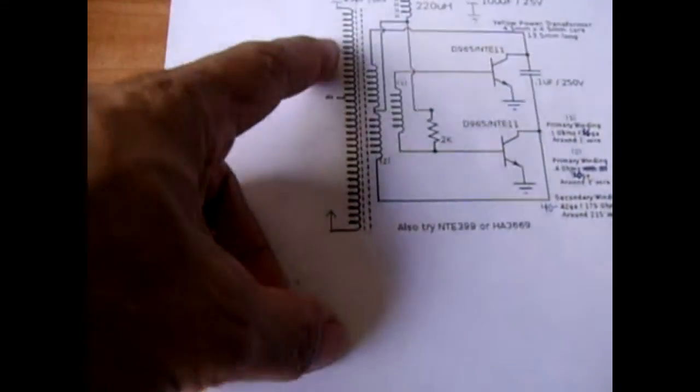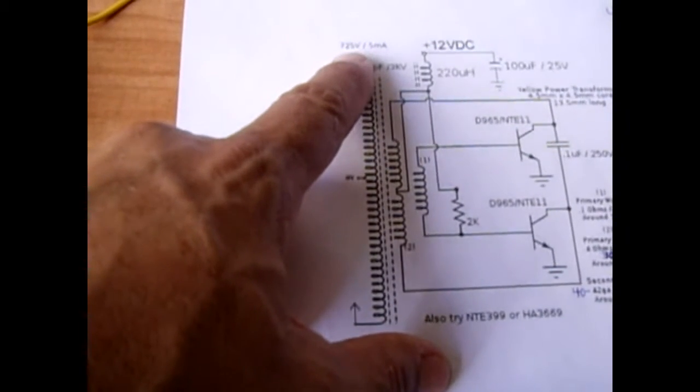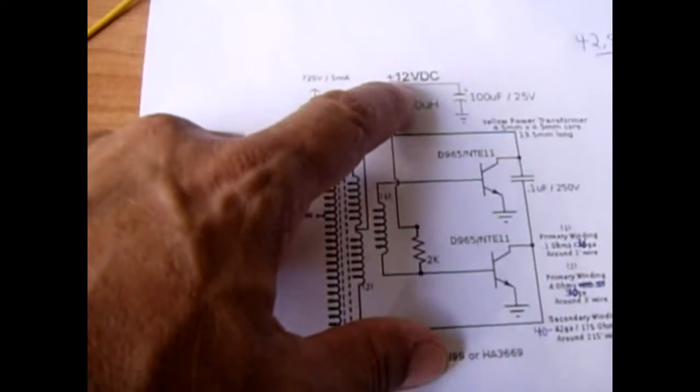Now when you wind your transformer, if you add more turns to the secondary you can get a lot higher voltage out of that. I have one that I did that was 1500 volts. So let's go over the schematic. 12 volts DC.